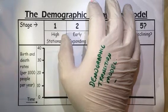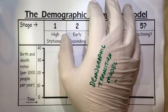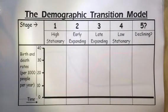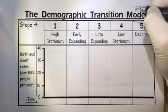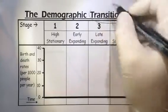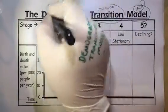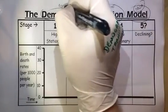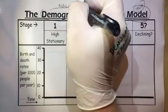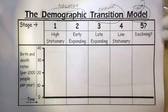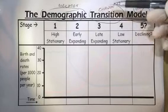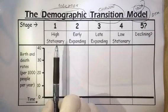Welcome to today's session about the Demographic Transition Model. In geography and other areas, the word 'model' is just a way to present an idea. 'Transition' is about change, and 'demographic' or 'demography' relates to population. So essentially, the Demographic Transition Model, sometimes shortened to DTM, is a way to present an idea about population change.